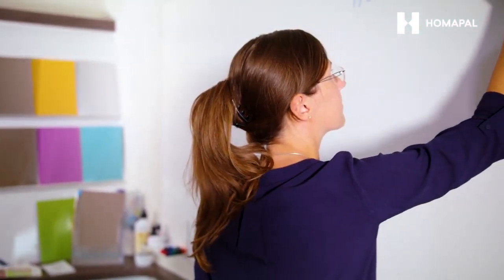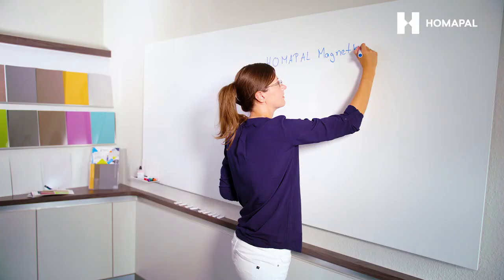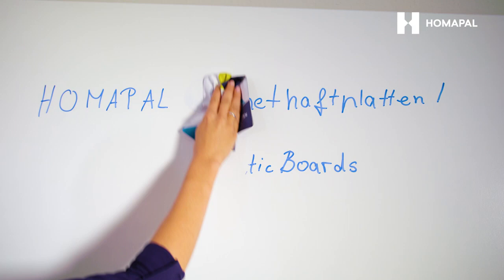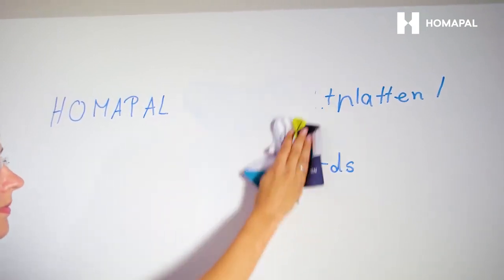The surface of the Decor 8207 is designed to write on with board markers. These writings can be removed dryly. To wipe the surface with a microfiber cloth is recommended.